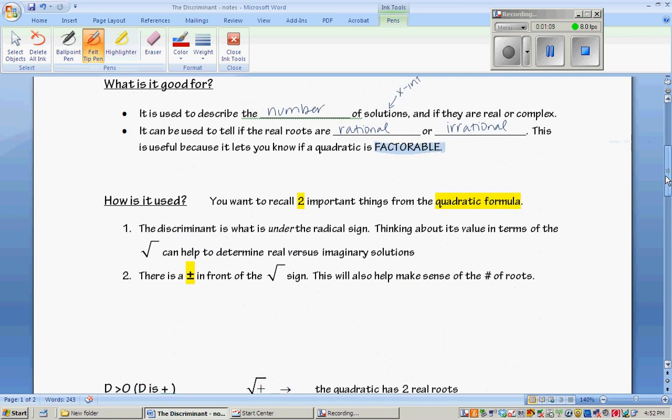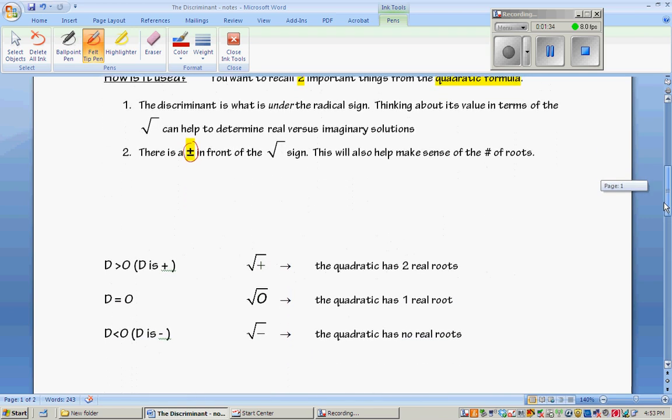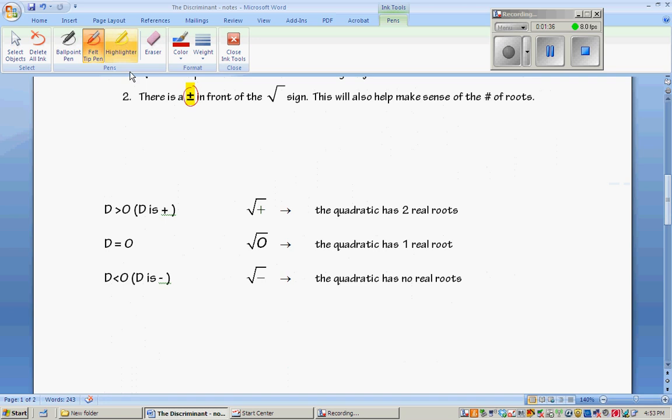So how do we use it? We need to think of two very important things from the quadratic formula. The discriminant is what's under the radical sign. If we think about it in terms of the square root, we can figure out if it's real or an imaginary solution. Remember that there's a plus and minus in front of the square root sign. This will make sense when we ask what is the number of roots.